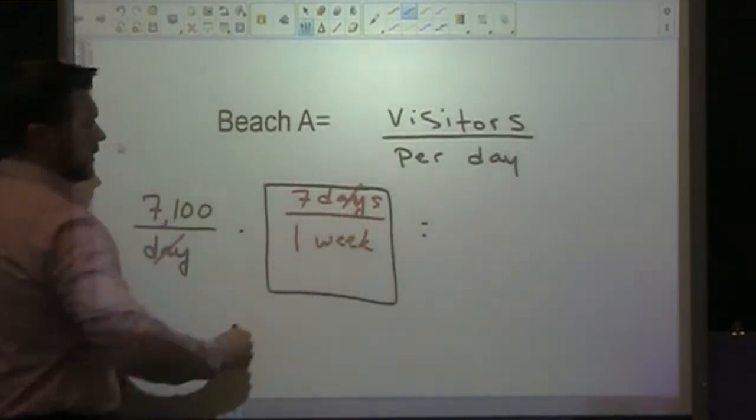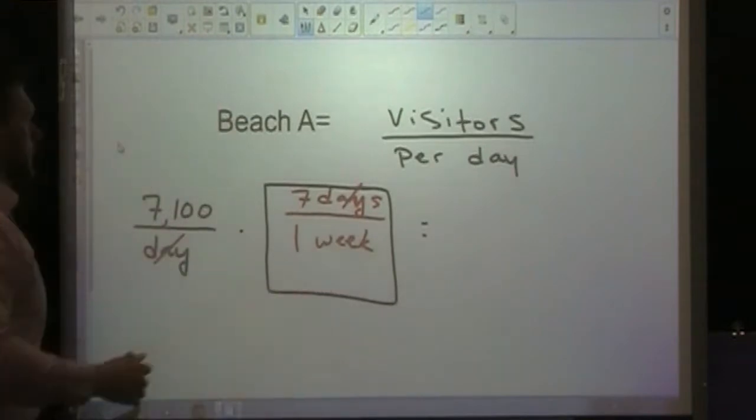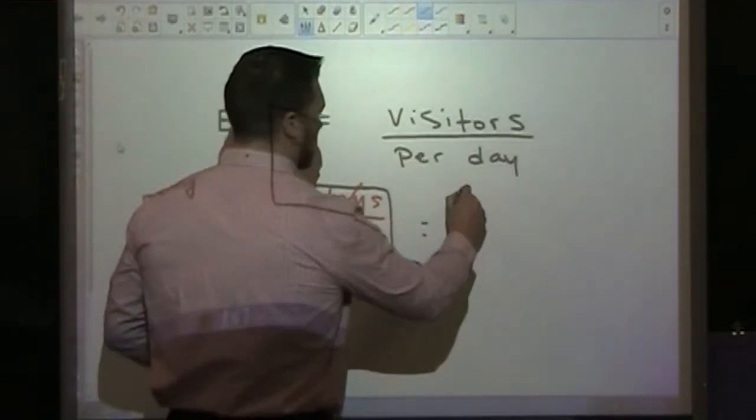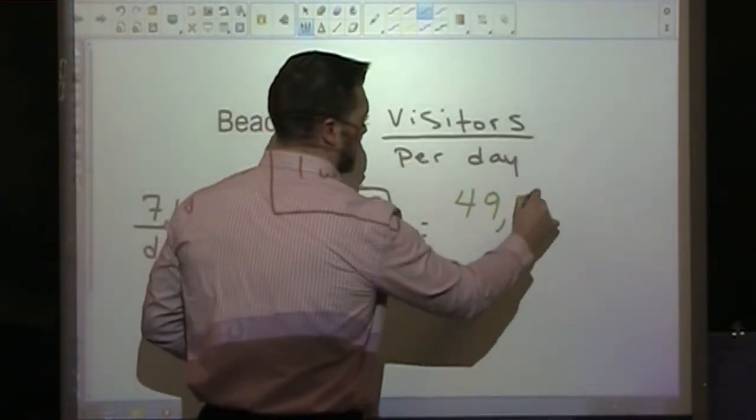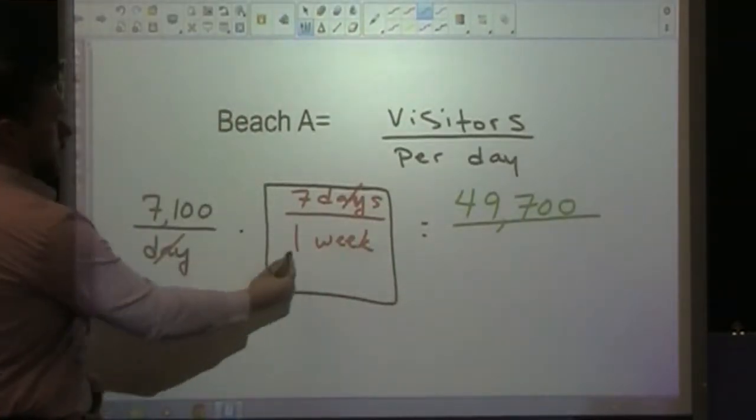Now we can cross-cancel the word days, and this will help us get our answer. If we do the multiplication, 7,100 visitors times seven gives us 49,700 visitors per week.